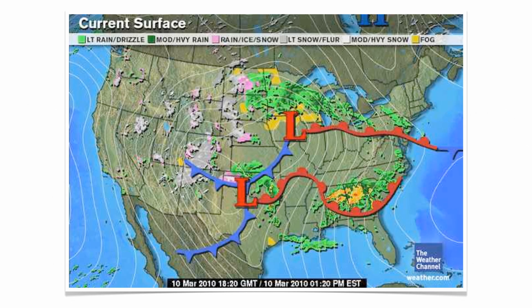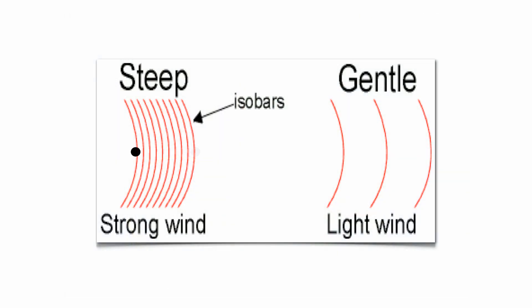Here's a weather map from March 10th, 2010. In the highlighted region, you'll notice the isobars are very close together — this shows where you have a very high pressure gradient and strong winds. On the left side, over about a mile of distance, you're looking at a 36 millibar difference. On the right side, over the same distance, you're only looking at about an 8 millibar difference — the lines are much farther apart and the pressure gradient is much smaller.